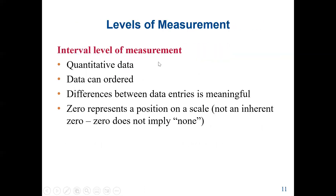The interval level of measurement is quantitative data where data can be ordered and the difference between data entries is meaningful. However, zero represents a position on a scale, not an inherent zero — zero does not imply none. For example, a temperature of zero degrees means it's very cold, not that there is no temperature. If a bank account balance is zero, that means no money — that is not interval level, that would be ratio.